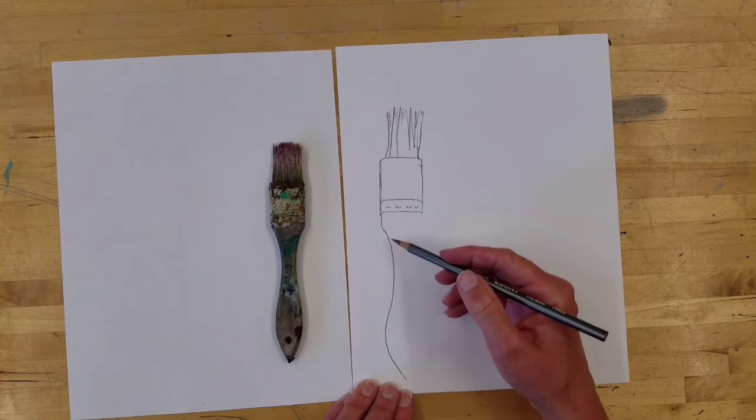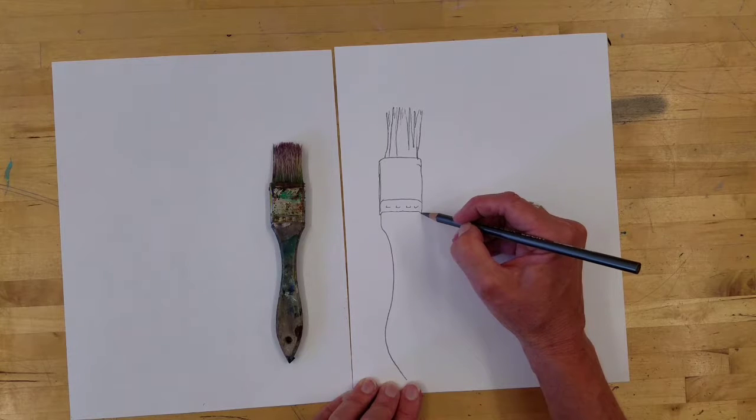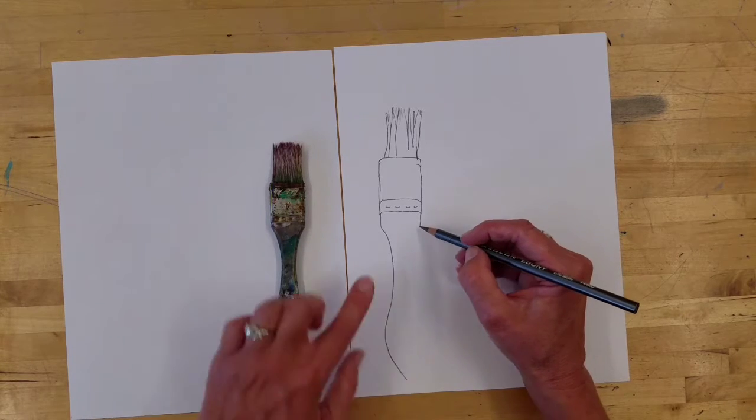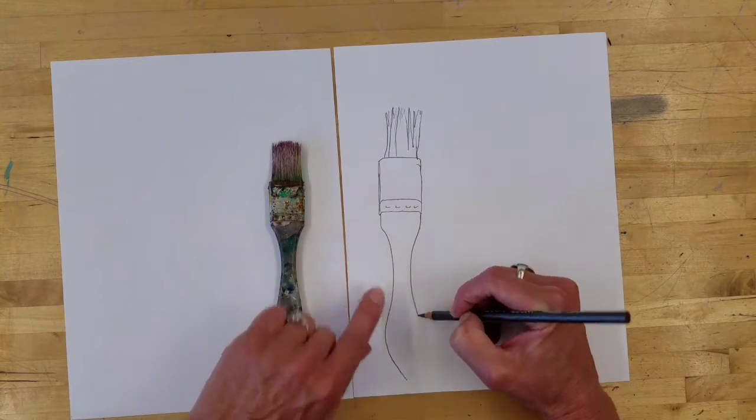If you stop and think about this, I just drew one side of the handle. Now I have to draw the other side of the handle. It's a lot like doing that face-vase exercise. So I'm going to concentrate on the line that I already have over here and see if I can get it to match, so it stays kind of symmetrical.